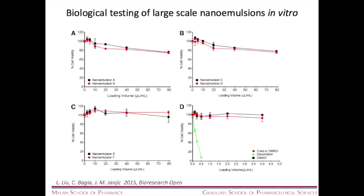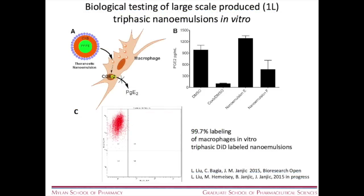Biological testing was very important — we wanted to make sure nanoemulsions scaled up to one liter maintain their non-toxic profile. This is toxicity data showing loading volume of nanoemulsion in cell culture for a variety of emulsions at different levels of scale: small, medium, and large. As controls we used free drug and the well-known toxic drug doxorubicin — doxorubicin kills cells, but the nanoemulsions do not. We also tested whether the large-scale nanoemulsion produces the pharmacological effect we want, and indeed it does — it reduces prostaglandin production by activated macrophages in vitro. Flow cytometry analysis showed 99.7% of cells in culture are labeled with our nanoemulsions, meaning macrophages really like to take them up in culture and they remain in those cells for quite some time.